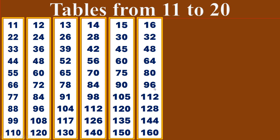16 sixes are 96. 16 sevens are 112. 16 eights are 128. 16 nines are 144. 16 tens are 160.